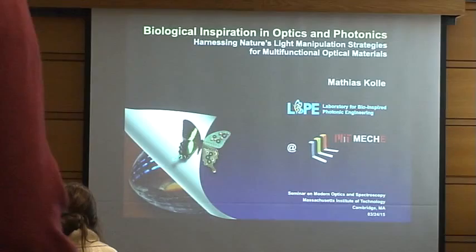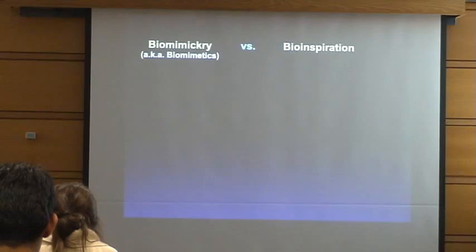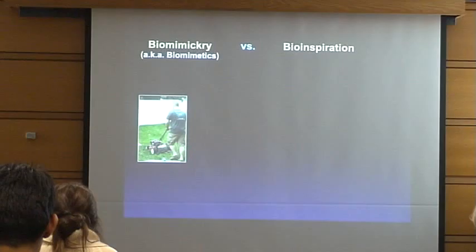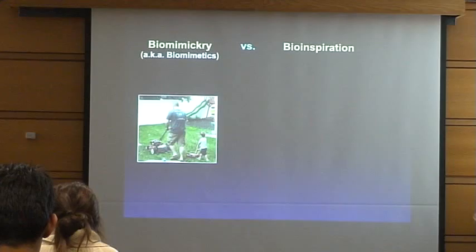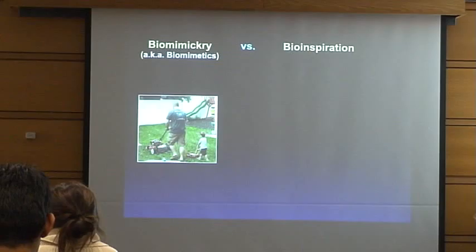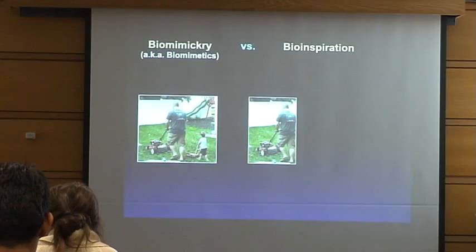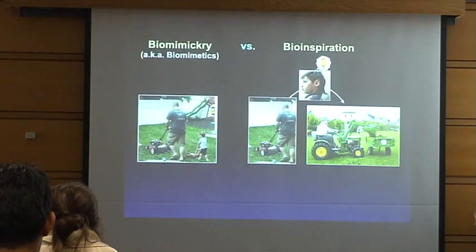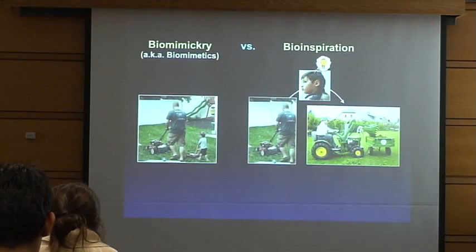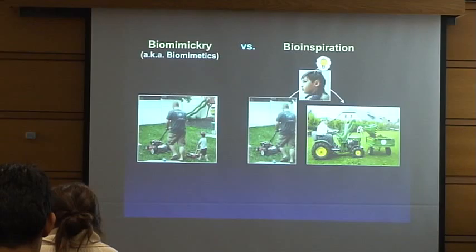The topic is biological inspiration for photonics. I want to distinguish between two terms: bio-mimicry and bio-inspiration. Bio-mimicry means seeing something in nature and doing it exactly the same way, because there are benefits to copying it directly. Bio-inspiration is more loosely defined — you see something in nature, then put your own knowledge and ingenuity into it, coming up with something different from the original structure, maybe better, and more suited to what you want to do. A lot of our work is more in that field, because it gives us more freedom to explore concepts not found in nature.